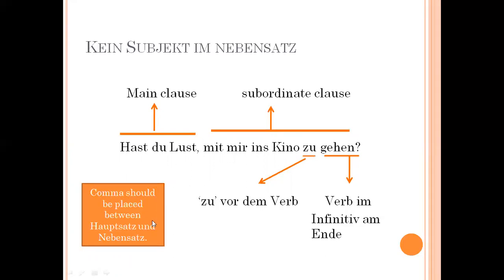A comma should be placed between the Hauptsatz (main clause) and the Nebensatz (subordinate clause). This is a requirement for all subordinate clauses — there must be a comma between the main clause and the subordinate clause.